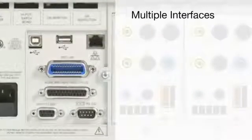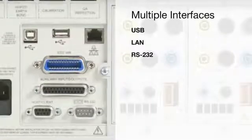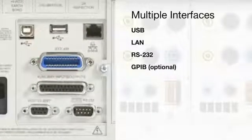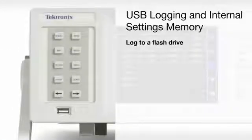For flexible control and data transfer, every PA-4000 comes with a USB device port, Ethernet port, and an RS-232 port. GPIB is available as an option. You can log measurements to your USB flash drive through the front panel USB port.